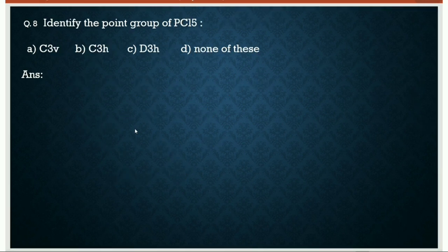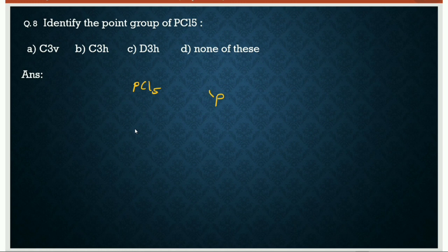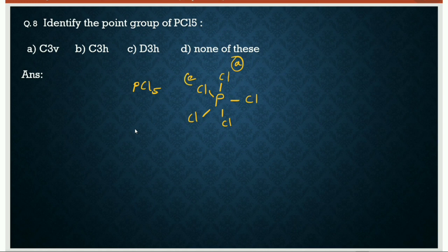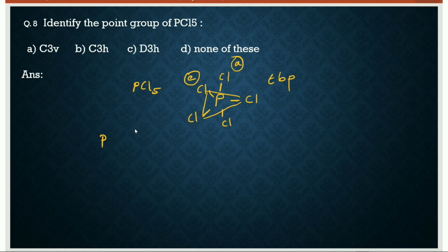Eighth question: identify the point group of PCl5 — C3v, C3h, D3h, or none of these. The structure of PCl5 is trigonal bipyramidal (TBP), with three chlorines in equatorial positions and two chlorines in axial positions. Let us consider phosphorus and the three equatorial chlorine atoms in the plane.